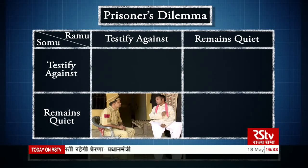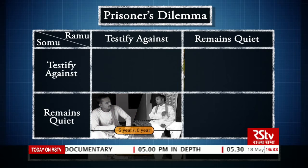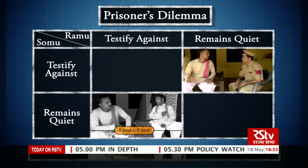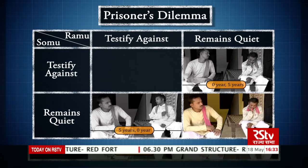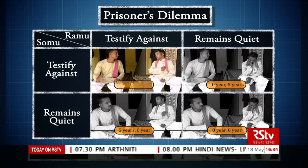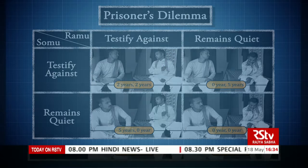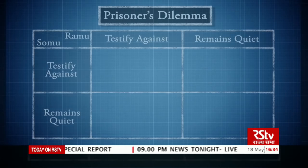The first possibility is that Ramu agrees to testify but Somu does not. In this case, Ramu gets off scot-free while Somu gets a five-year sentence. Similarly, if Somu testifies and Ramu remains silent, then Somu goes scot-free and Ramu gets a five-year sentence. If neither testifies, choosing to remain silent, then both go scot-free — Sharma Sahib will have no reason to hold them. If both testify against each other, they will both be forced to serve a two-year sentence.